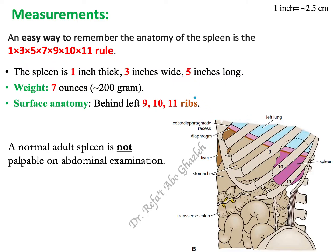Now let me show you the measurements. There is an easy way to remember them — look for these odd numbers. The sequence is: 1, 3, 5, 7, 9, 10, and 11. I'll explain what each number means.